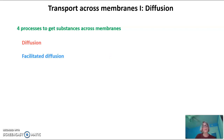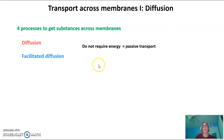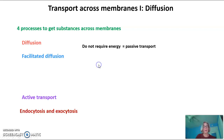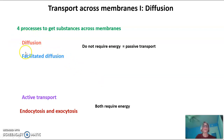There's also facilitated diffusion. These are both passive forms of transport — they do not require energy. There's also active transport and endo and exocytosis. These both require energy. But tonight's video is just going to focus on diffusion.